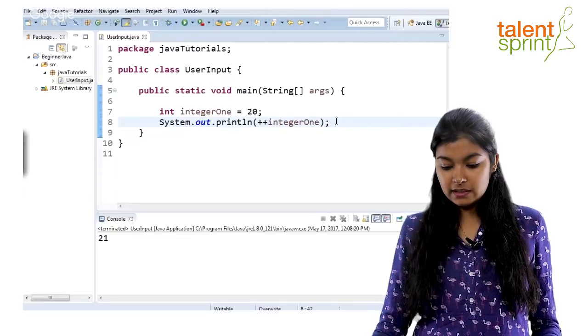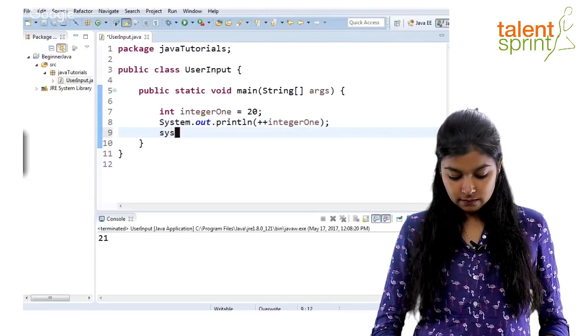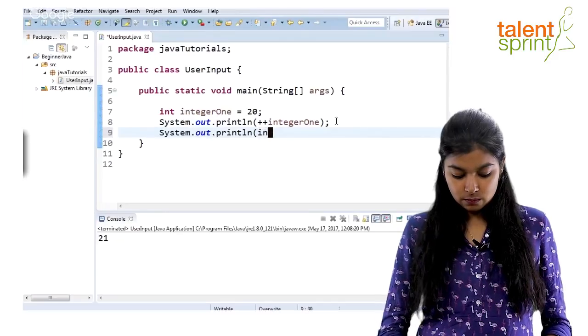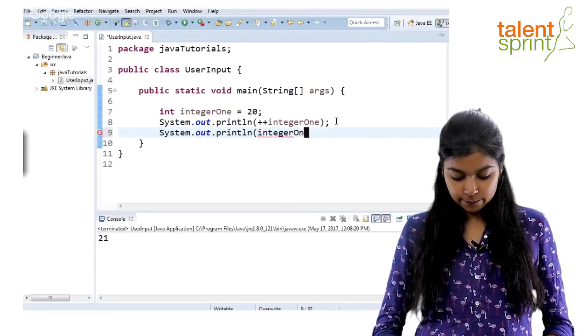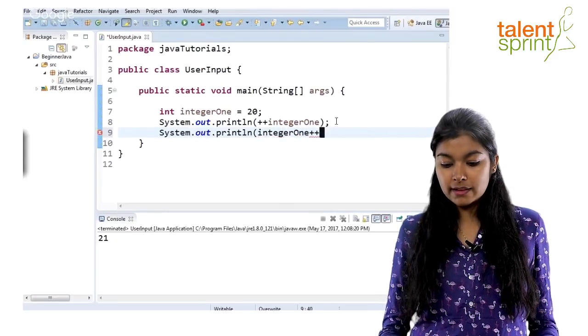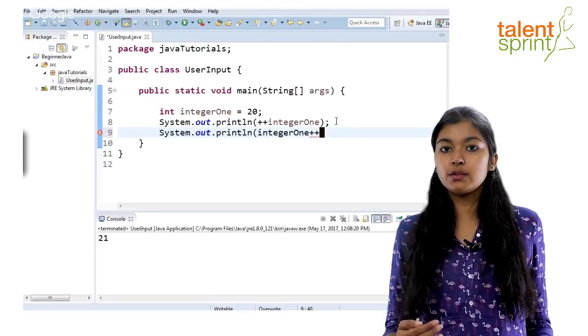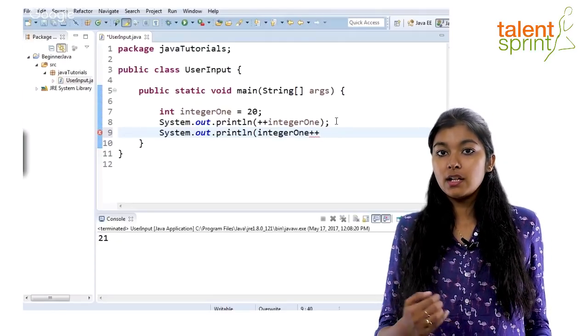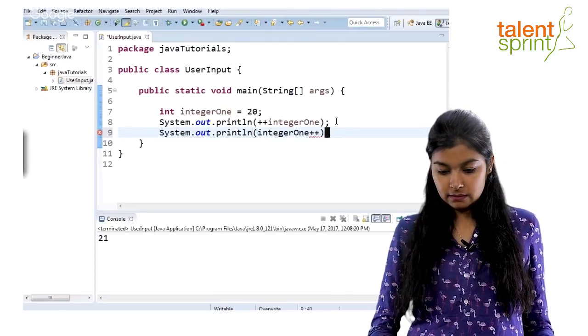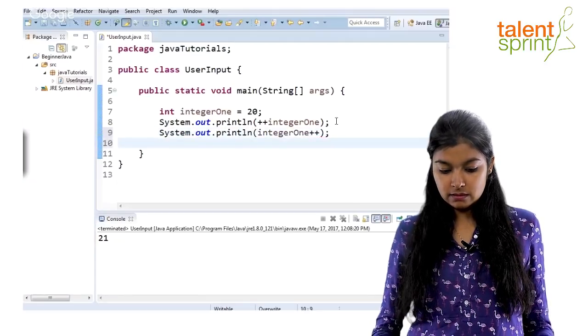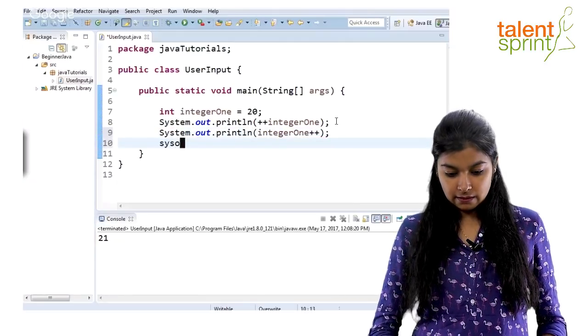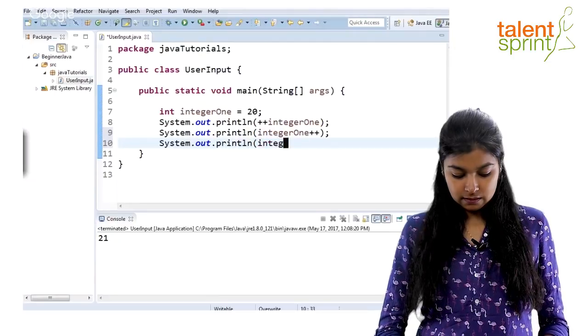Now if the same thing you do again but this time you do plus plus later, this is called post-increment. What this will do is print your value first but then increment it. So if you do this and then again write integerOne.